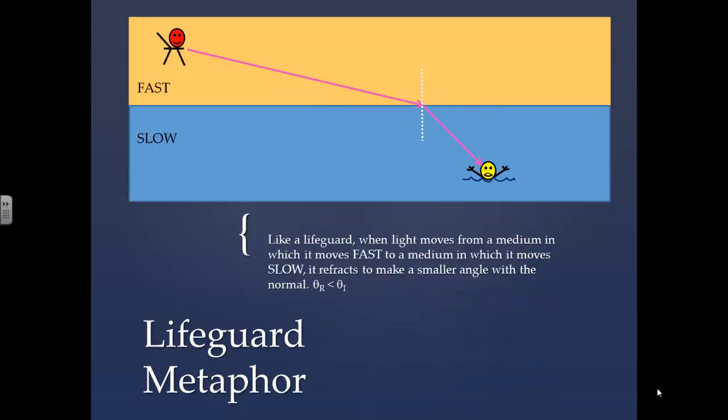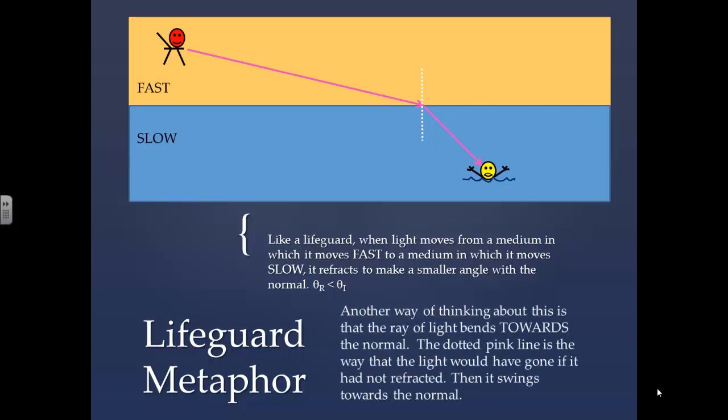Like a lifeguard, when light moves from a medium in which it moves fast to a medium in which it moves slow, it refracts to make a smaller angle with the normal. Angle of refraction is less than angle of incidence.